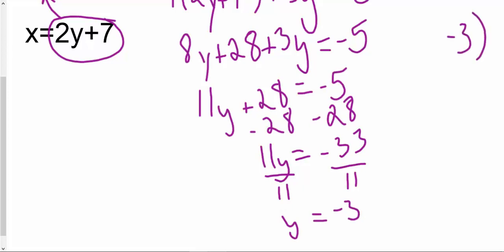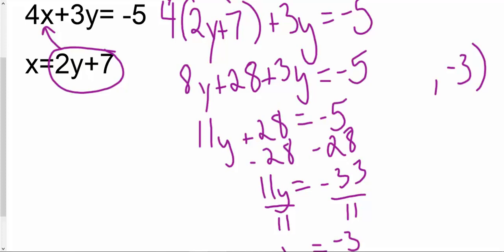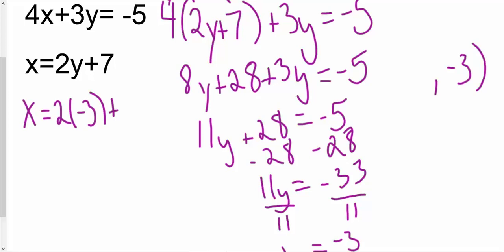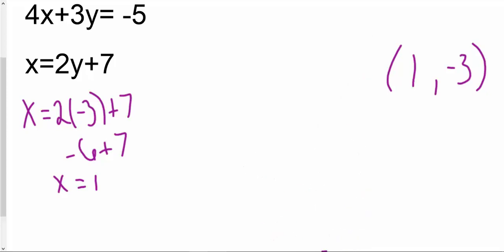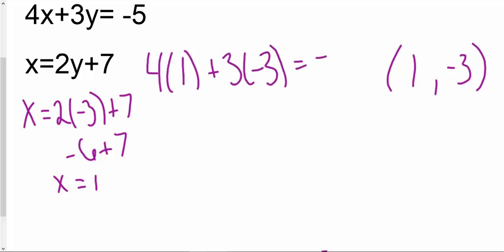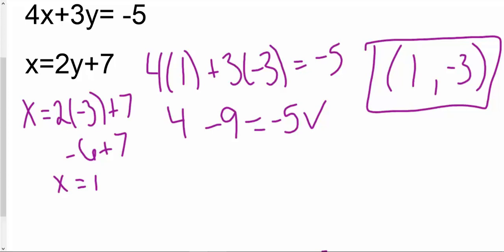So I know our y value is negative 3. From here, I could plug negative 3 in for y on either equation, but it makes sense to use the second equation because that will give me an x value faster. In that second equation, I'm replacing y with negative 3, and then simplify to get x equals 1. Of course, we need to make sure that works for both equations, so we plug that value into the first equation. We go 4 times 1 plus 3 times negative 3 equals negative 5 — that means 4 minus 9 equals negative 5 — and that's true. So our answer is 1 comma negative 3.